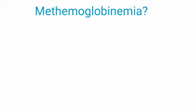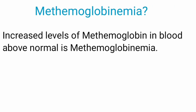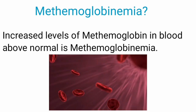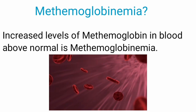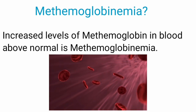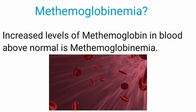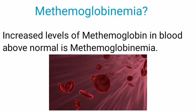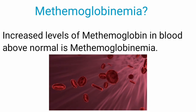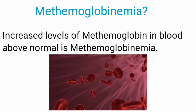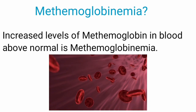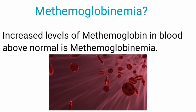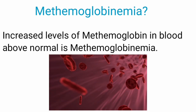What is methemoglobinemia? Increased levels of methemoglobin in the blood above the normal level is called methemoglobinemia. It leads to decreased oxygen transport. The normal level of methemoglobin in the blood is less than one percent.